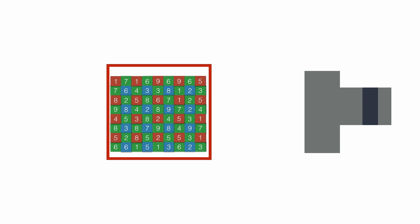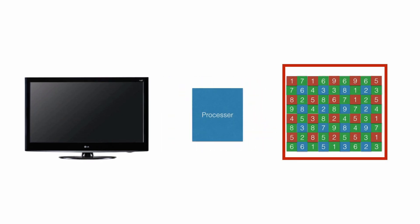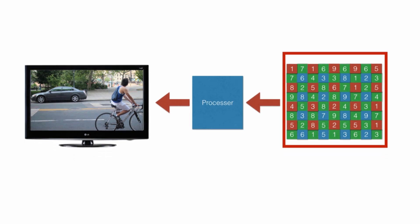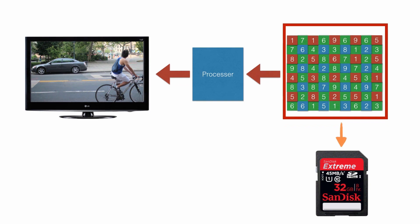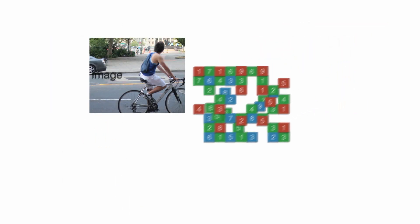Now we have a table of numbers. These numbers cannot be displayed on a TV, as the TV is looking for an image, not numbers. In order for the image to be viewed on a TV, the image must first pass through a processor that processes the information and produces a displayable image. So now we have two options: we can either save the raw data — basically the numbers captured by the photo sites — or we can save the processed image.